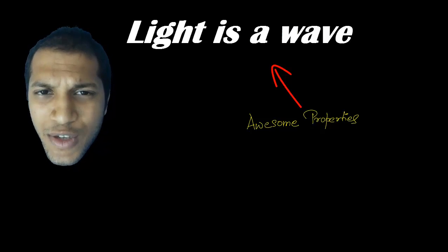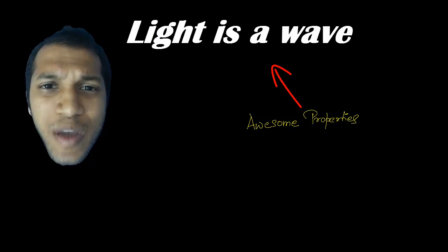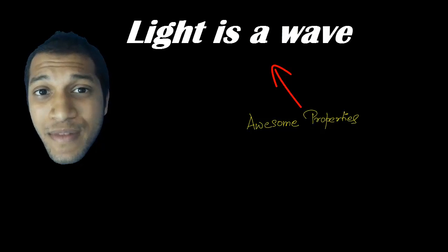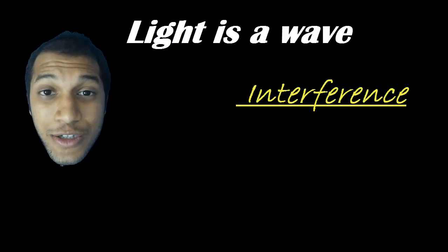So to understand this, we need to understand these amazing properties of the waves first and then apply them to light. And the first property that we're going to talk about is called interference of light.